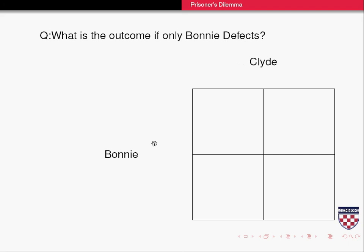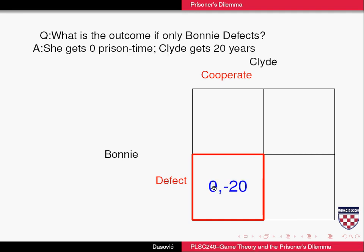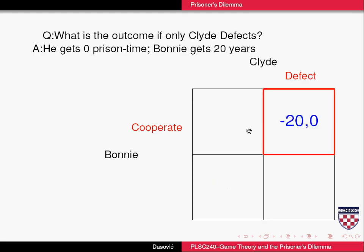What's the outcome if only Bonnie defects? Then she defects and Clyde cooperates — cooperating meaning not betraying your fellow prisoner, while defecting means betraying them to the police. The left value is always Bonnie's, and the value to the right of the comma is Clyde's. So if Bonnie defects and Clyde doesn't betray her, she goes free with zero years of jail time, but Clyde gets 20 years. The negative sign indicates disutility — you don't want to be in jail. Because it's a symmetrical game, the opposite holds if Clyde betrays Bonnie: Bonnie gets 20 years and Clyde gets zero.